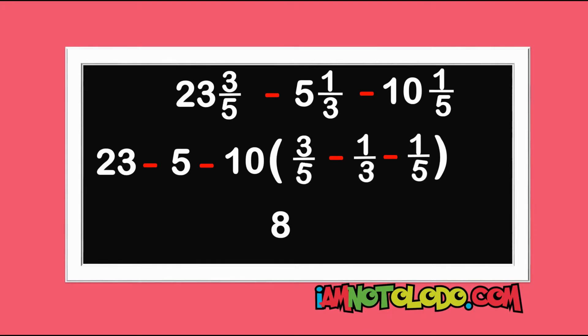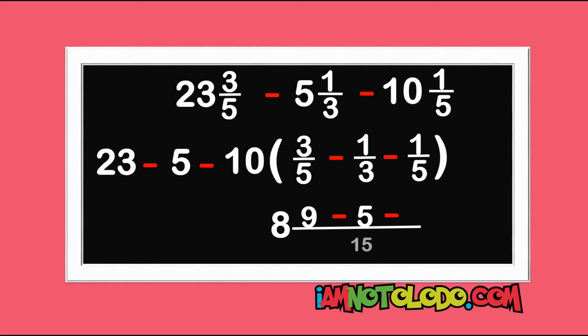Our denominators are not the same, so we need to find the LCM. The LCM of 5, 3, and 5 is 15. 5 in 15 is 3 times 3 is 9, minus 3 in 15 is 5 times 1 is 5, minus 5 in 15 is 3 times 1 is 3.